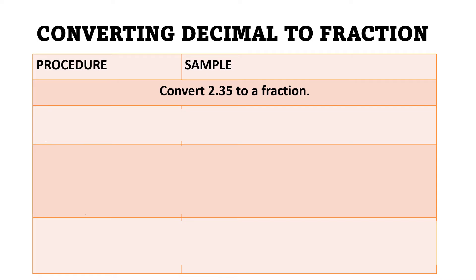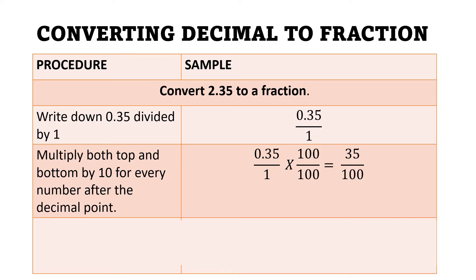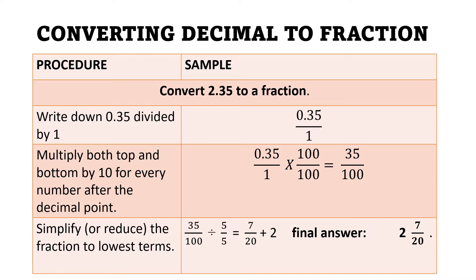Another example: convert 2.35 to a fraction. We write down the decimal part only, so 0.35 over 1. Then we multiply by 100 since we have two decimal numbers after the decimal point. So 0.35 times 100 is 35, and 1 times 100 is 100. Now we reduce 35 over 100 to lowest terms. The GCF is 5, so 35 divided by 5 is 7 and 100 divided by 5 is 20. We have 7 over 20, then we add the whole number 2. Our final answer is 2 and 7 over 20.